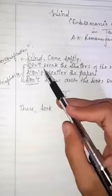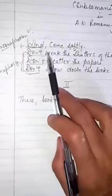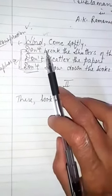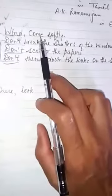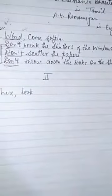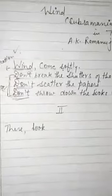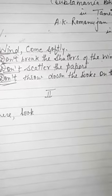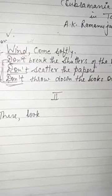In the second line, the poet says: don't break the shutters of the window, don't scatter the papers, and don't throw down the books on the shelf.